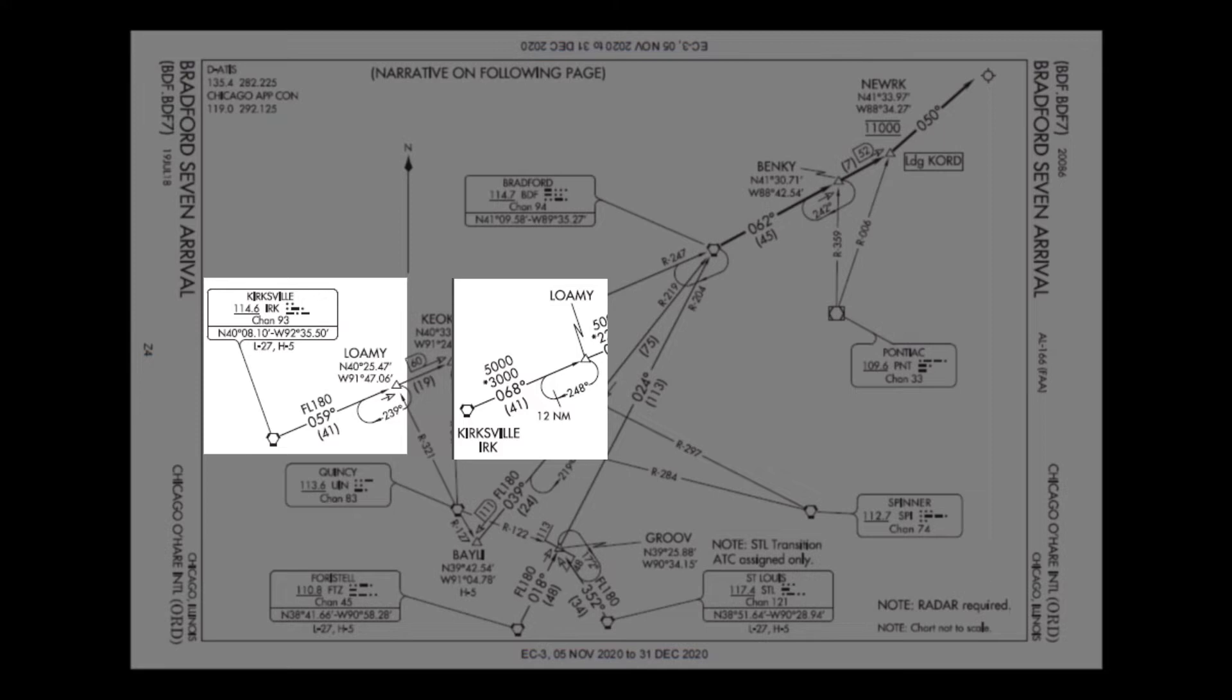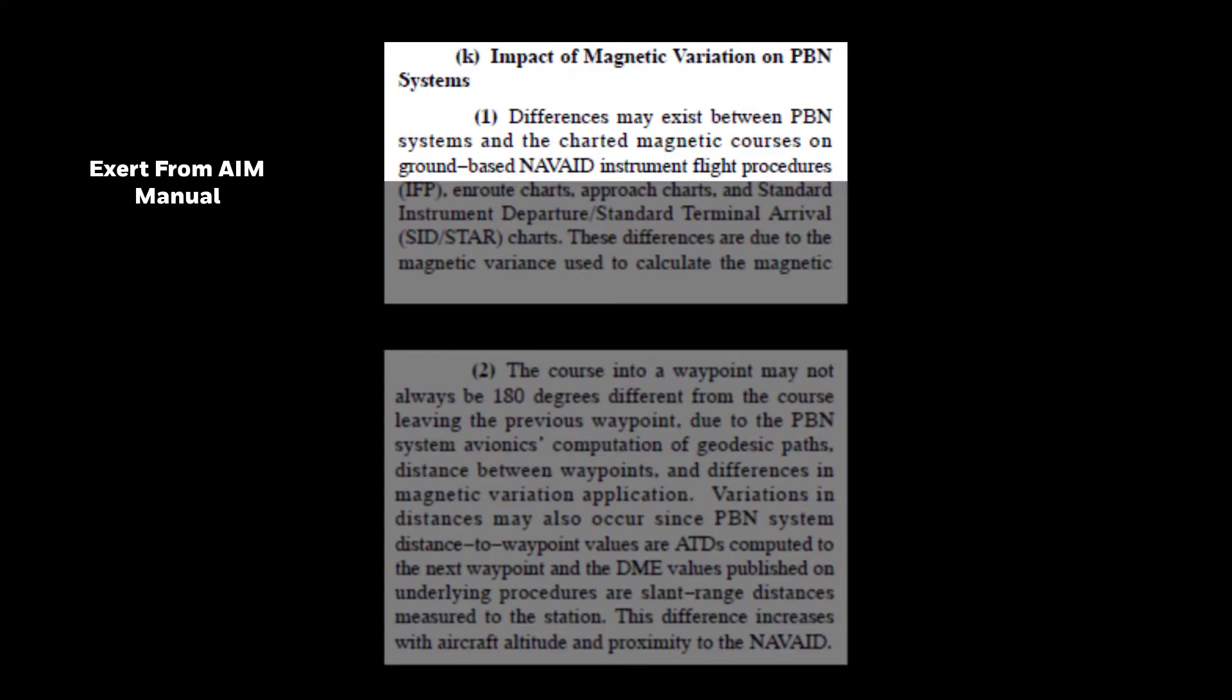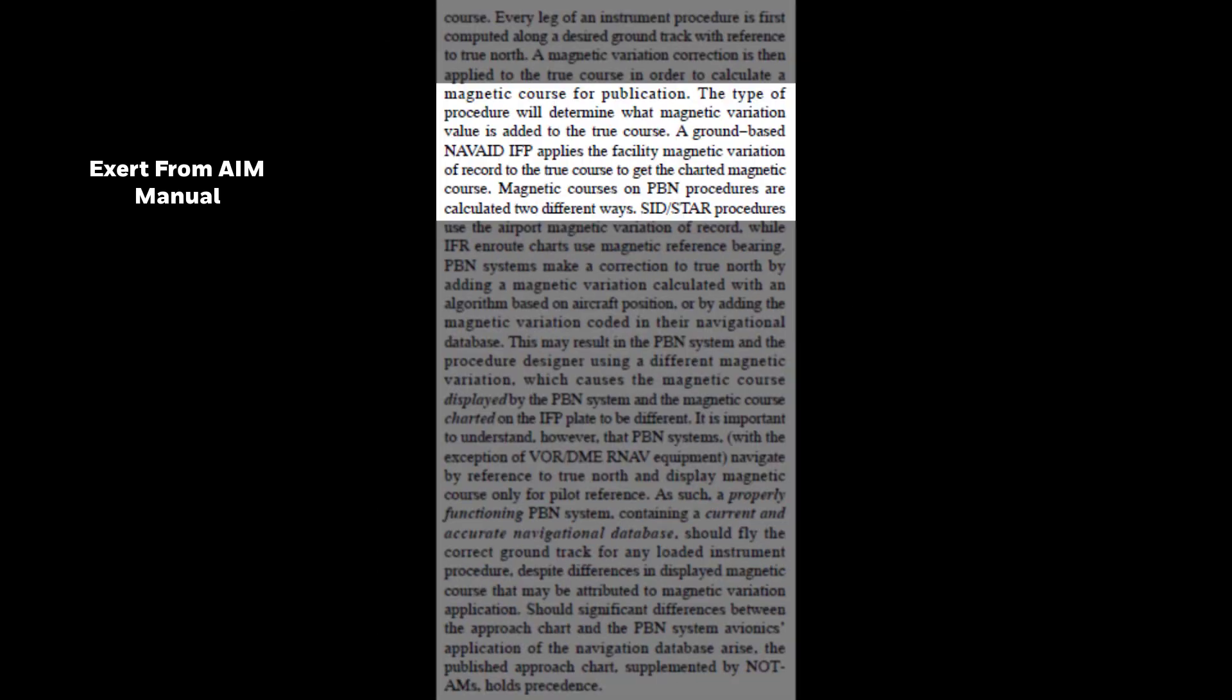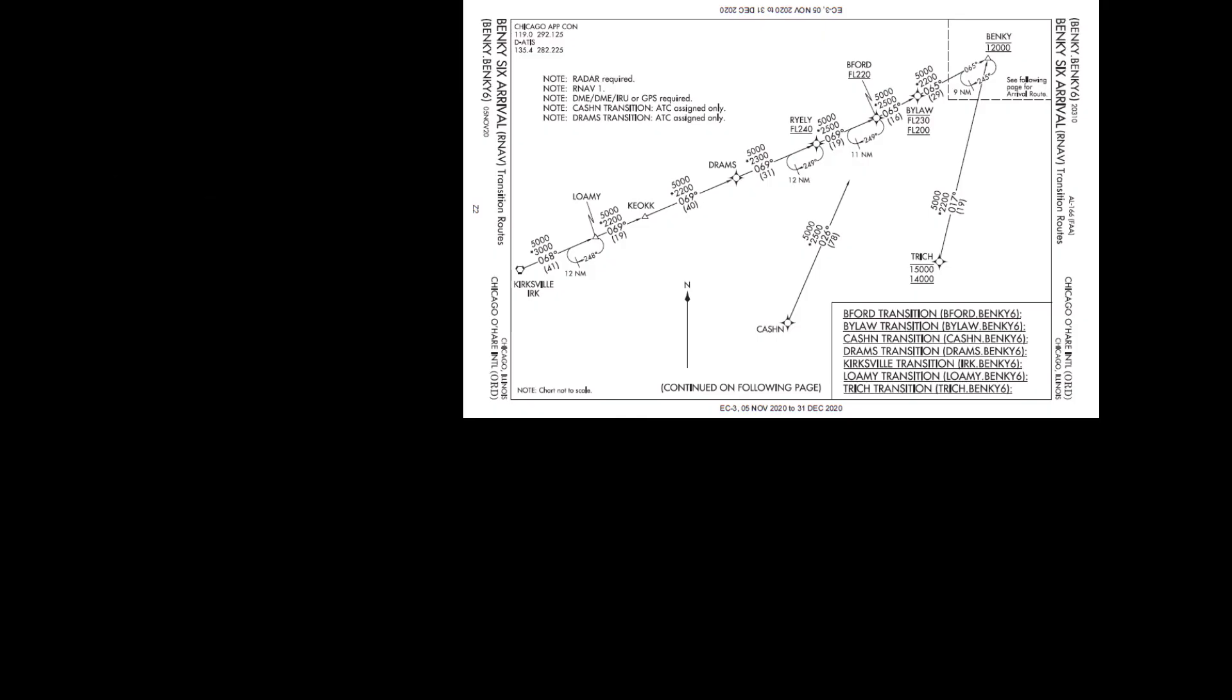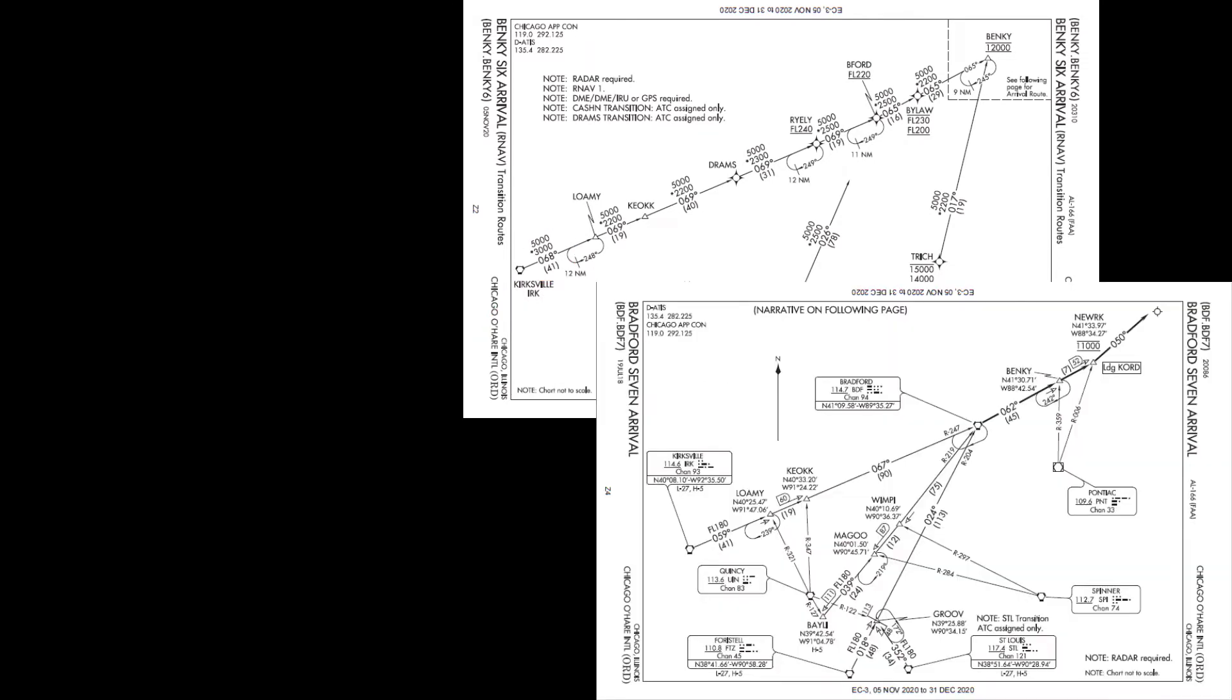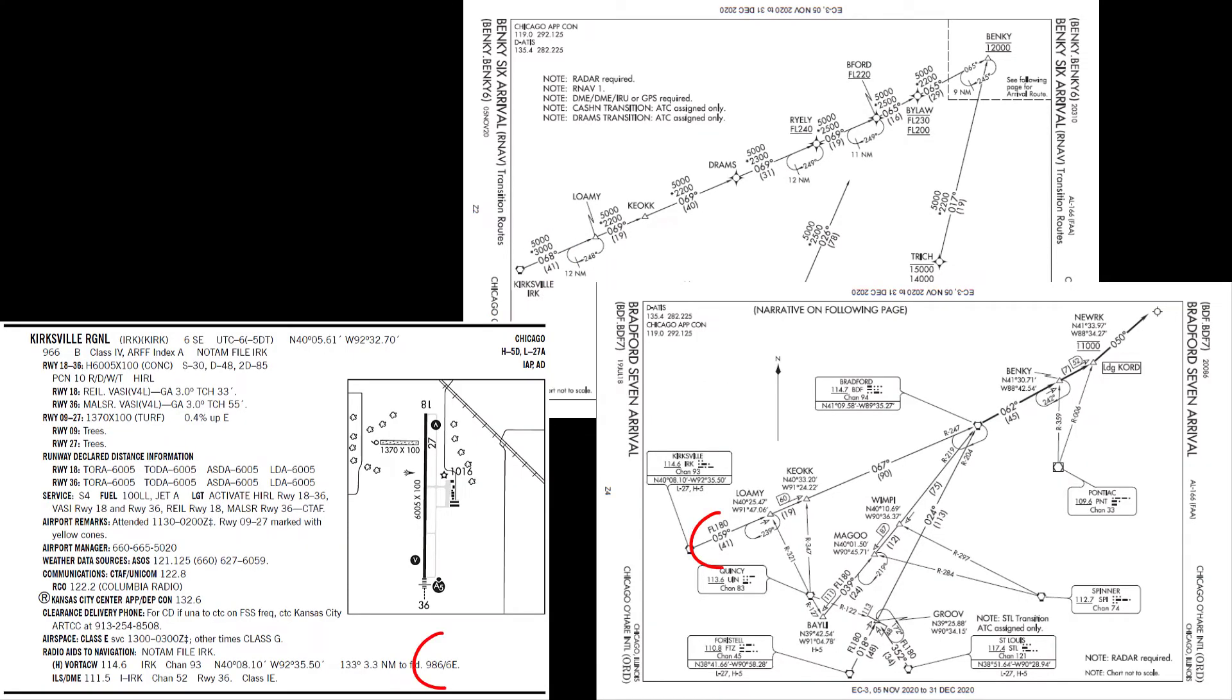So our original question was why doesn't my magnetic course match the charted course? But the charted courses don't even match each other. Procedure design is beyond the scope of this quick topic video, but the AIM gives us some insight. For the Benke 6 RNAV procedure, the airport variation is applied to the whole procedure. But for the Bradford 7 arrival, the VOR variation is used. The airport is 3.8 degrees west, while the VOR is 6 degrees east, which is roughly our 9 degree difference.